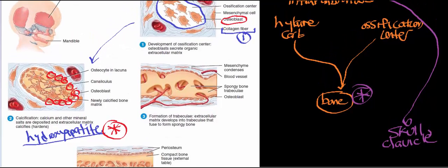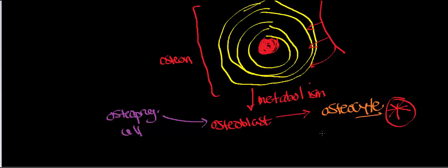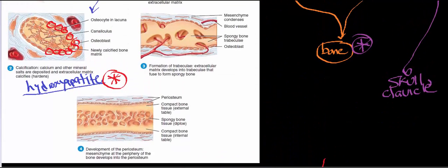An important distinction: osteoprogenitor cells can turn into osteoblasts, and osteoblasts can transform into osteocytes under low-nutrient conditions. Osteoclasts, however, are not related to this lineage — they are derived from macrophages that take up residence in the bone. Osteoclasts have a different precursor cell, and they actually retain some of the macrophagic activity of their ancestors.